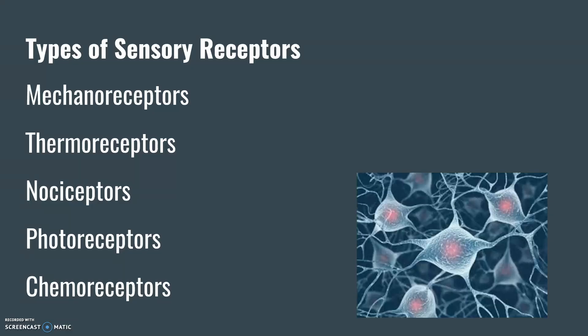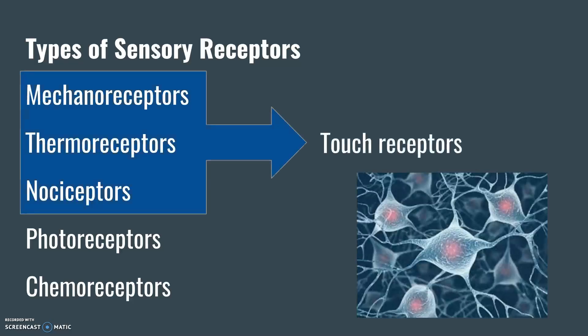We also have thermoreceptors, which, as I'm sure you have already guessed, sense temperature changes. We also have nociceptors, which are in charge of us feeling pain, which, while not pleasant, can definitely be important for us and our livelihood. These first three on the list are examples of touch receptors. We also have photoreceptors that sense light, and chemoreceptors that sense chemicals and other chemical compounds.